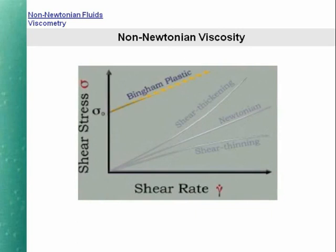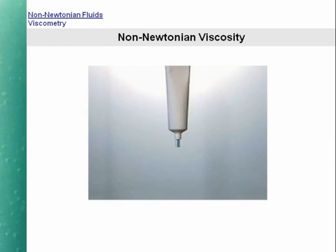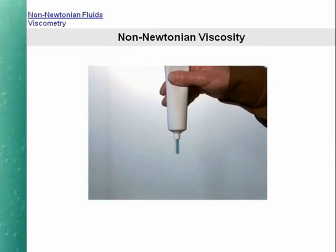Some materials do not appear to flow until a critical stress, or yield stress, is exceeded. If the shear stress/shear rate graph above the yield stress is a straight line, we have what is commonly referred to as a Bingham plastic material. An obvious example of a plastic material in common use is toothpaste. Clearly, toothpaste is a solid material at rest — it will not flow under its own weight, in the tube, or on the brush. It can easily be made to flow by applying a sufficiently high stress, and in normal circumstances it will have the necessary mobility under the high stress involved in the brushing action.